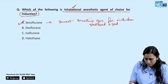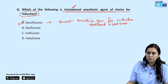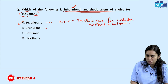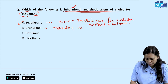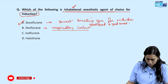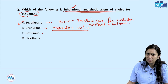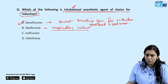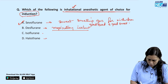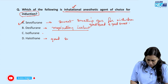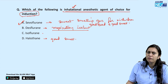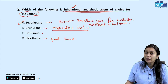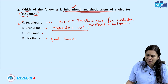Desflurane is a respiratory irritant, so it cannot be used for induction. Isoflurane has an ethereal smell and we try to avoid it for induction. Halothane is sweet-smelling and can be used for induction, but it is slower than Sevoflurane. We need fast induction with a good-smelling gas, and Sevoflurane fulfills that criteria, so Sevoflurane is the answer.